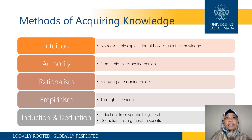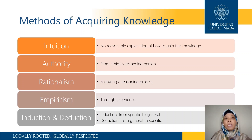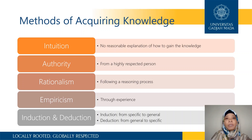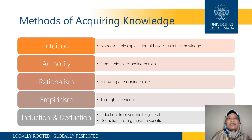Deduction is basically the opposite of induction — this is when we make a specific conclusion from something very general. For example, if we see a theory that all kindergarten kids are aggressive, then when we see one kid in a kindergarten classroom, we would expect that at one point this kid would hit one of his friends. That's making a specific conclusion about a particular kid from something very general.